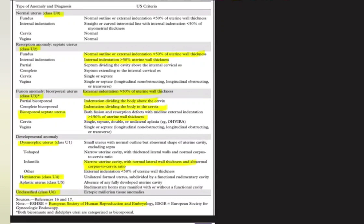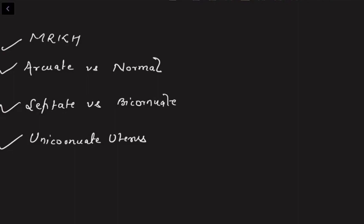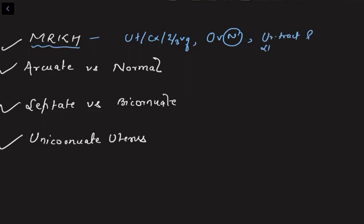Clarifying a few confusing terms: MRKH syndrome is failure of development of the uterus, cervix, and upper two-thirds of the vagina. The ovaries are normal and associated with urinary tract and skeletal abnormalities. Ovaries can also be found at abnormal locations — even around the kidneys — in 40% of cases.